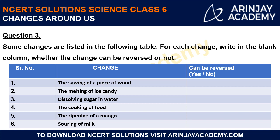The first change is the sawing of a piece of wood. If you have cut a piece of wood and separated a wooden block from a tree, you cannot fix it back into the tree trunk. So this change cannot be reversed — it's a no. Second, the melting of an ice candy. If an ice candy melts from its solid form, you can again freeze it to get back to its initial form. So yes, this change can be reversed.